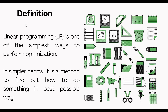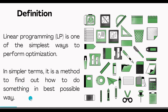In linear programming, we are performing the process called optimization. It's like we need to do everything in the best possible way, or in the most efficient way, with all the things we have. That can be called linear programming or optimization.